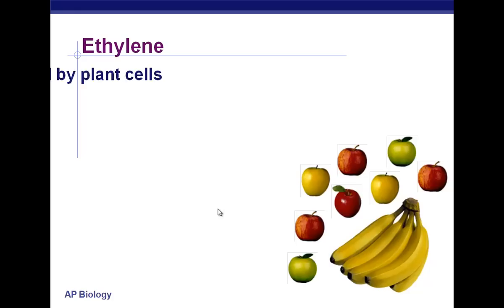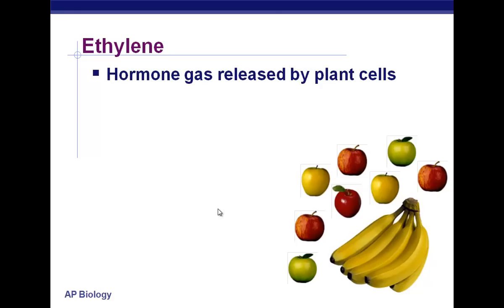Finally, we have ethylene. Ethylene is a hormone that's a gas — a little different from the others. It is released by plant cells, and what this gas does is help fruit ripen by breaking down the cell walls of fruits. As you break down cell walls, the fruit becomes softer. Think about eating an unripe pear — it's like biting into a rock. As the fruit ripens it gets softer and softer, and an overripe fruit is like eating baby food because so many cell walls have been broken down.